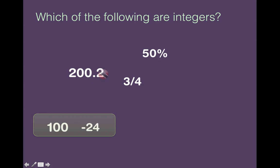200.2, that has a decimal part, so that's not an integer. 3 quarters is a fraction, so that's not an integer. And 50 percent is a percentage, so that is not an integer.